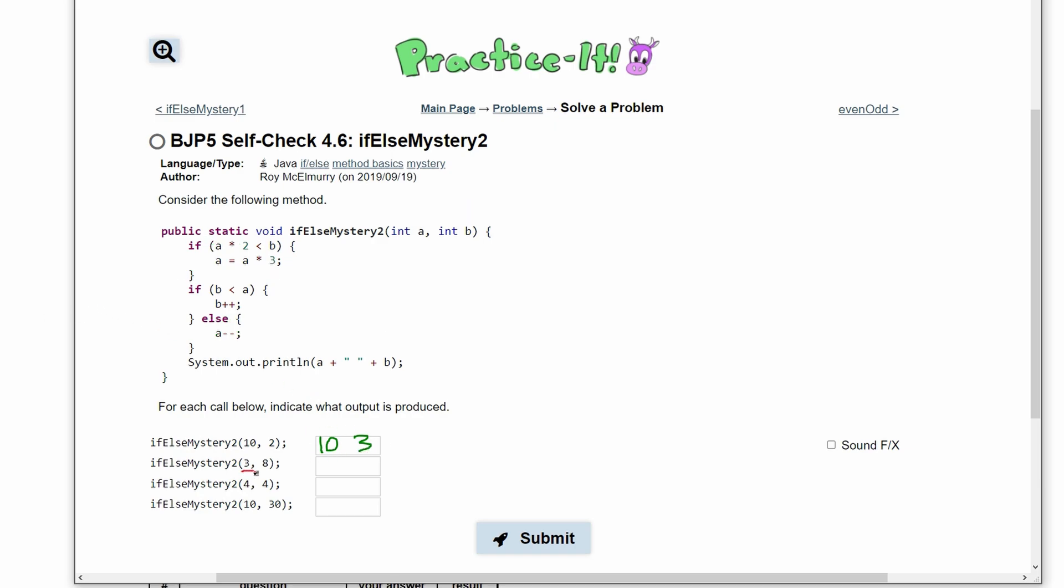Next we have the pass of 3 and 8, so our a is 3 and b is 8. In our first if-statement, we have a times 2, which will give us 6 for a. This has to be less than b. Since this is less than b, which is 8, we are going to be inside of this if-statement. We are making a equal to a times 3. So a is equal to 3 times 3 basically. That means a is now going to equal 9.